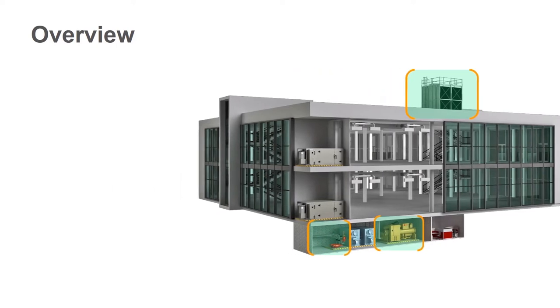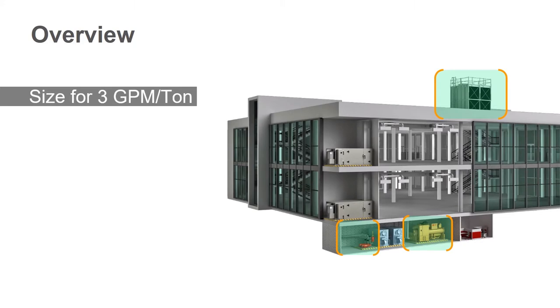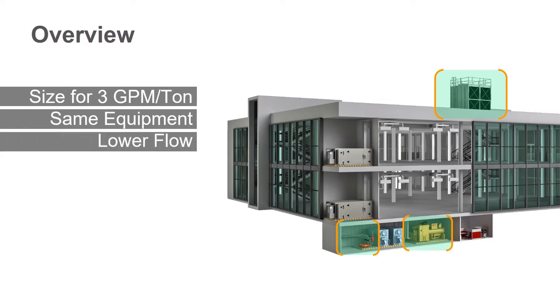So how the tool is going to work is we're going to take all those components and we're going to size them for 3 GPM per ton. And then we're going to take the same or very similar pieces of equipment and we're going to run them at a lower flow rate. We're going to iterate down from 3 GPM per ton down to 1.5 GPM per ton. And then we're going to take a look at annual energy results, so not just a full load design or part load points, but true annual energy, and try to see if there's a system flow rate on the condenser side of the system that gives you the lowest annual energy.